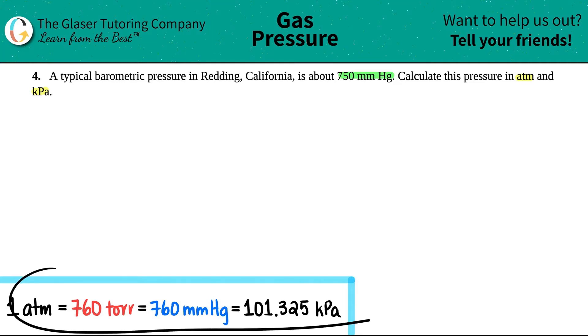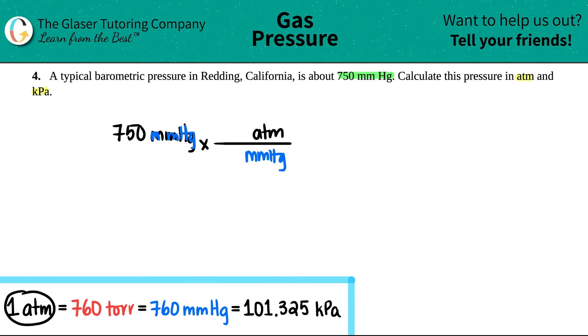All we have to do is just memorize our conversion factors and convert. So let's start off with 750 millimeters of mercury, and we're just converting. We're pretty familiar with how to convert, right? We times by a ratio, and if we don't want millimeters of mercury, we put that on the bottom - mmHg on the bottom. Let's just convert to atm first, so atm is at the top. Now I use my conversion. These are all equal to each other, so you just pick out the two that you're using. One atm equals 760 millimeters of mercury, so 760 goes on the bottom and one goes up on top.